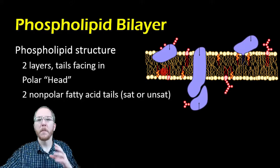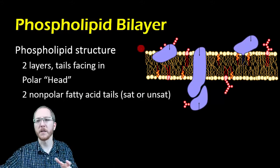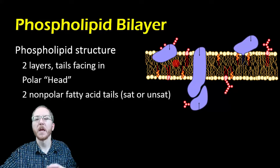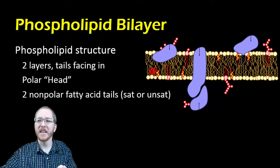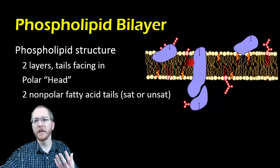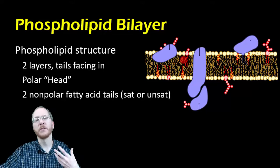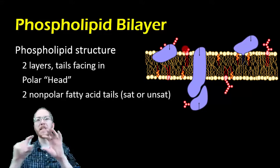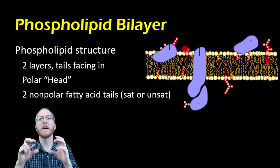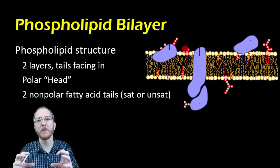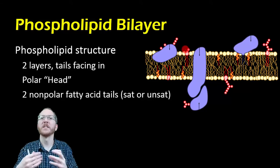Looking at the phospholipid bilayer in more depth, you can see the head regions on the outside and inside with the two tails sticking in between. There are different types of fatty acids — some appear fairly straight, those would be saturated, and some bend pretty strongly, those would be unsaturated. Having unsaturated fatty acids spaces out the lipids, making the membrane more fluid, more flexible, and easier for things to shift around.